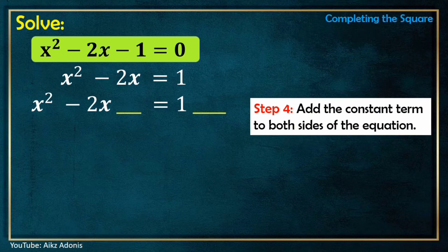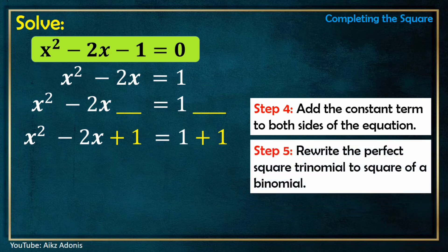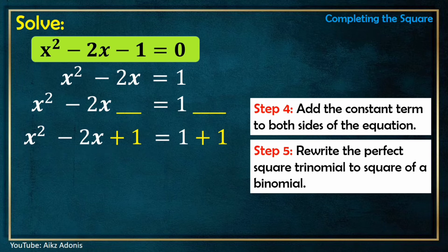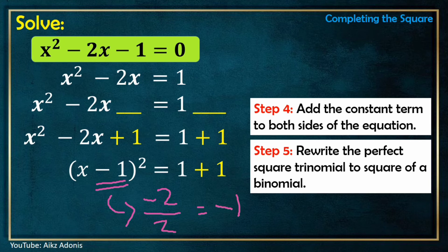Step 4: Add the constant term to both sides. Since the constant term is 1, we add positive 1 to both sides, giving x² - 2x + 1 = 1 + 1. Step 5: Rewrite the perfect square trinomial x² - 2x + 1 as a square of a binomial. The binomial form is (x - 1)². We get -1 by dividing b, which is -2, by 2: -2 ÷ 2 = -1.